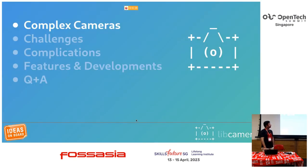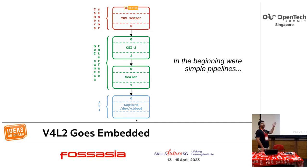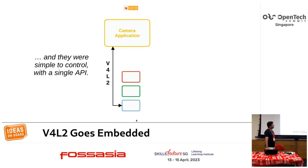Let's begin with complex cameras. Around 10 years ago, cameras were simple. You really had a sensor, and on the SoC you had either a CSI-2 receiver or a scaler which would scale your images and give you output to the capture node. Applications could work with them easily — they were simple to configure and to develop.